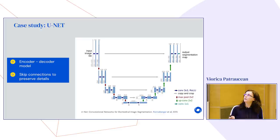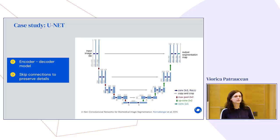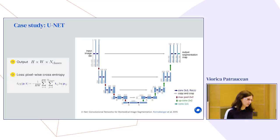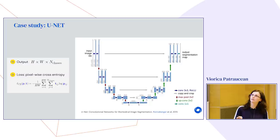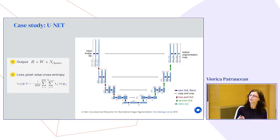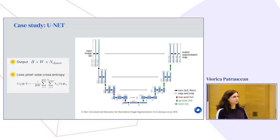To train this kind of system, the output has the same spatial size as the input times the number of classes — for every pixel location, we have a probability distribution over all possible classes. We train using the same cross-entropy loss used for classification, but now averaged over all spatial locations in the input.